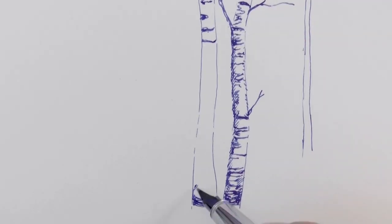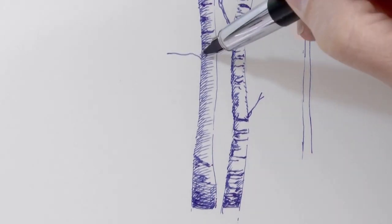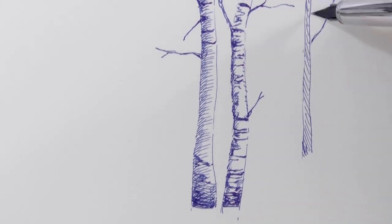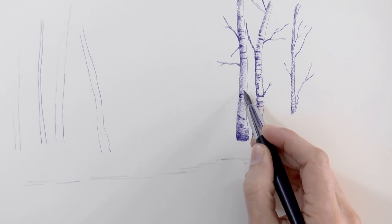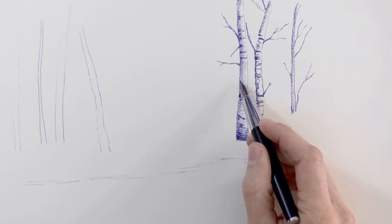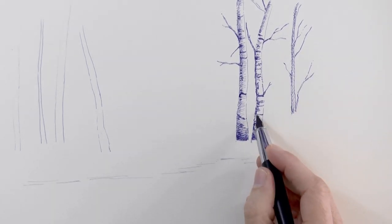I make some small branches coming from the main trunk. And the shadows I make them with short lines that usually follow the shape of the trunk or the part that I am drawing. And let's draw some grass!